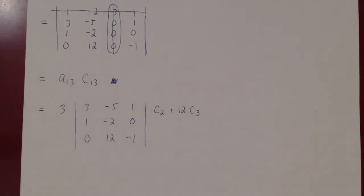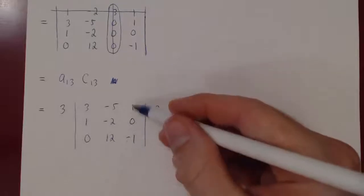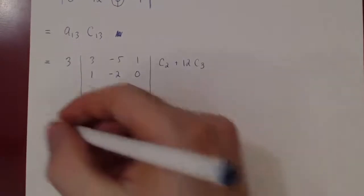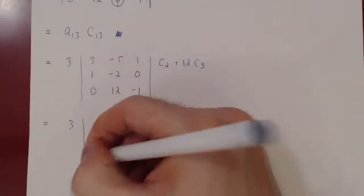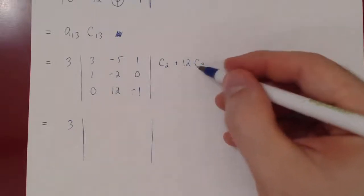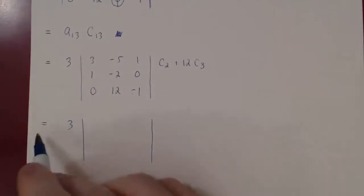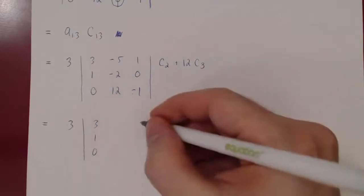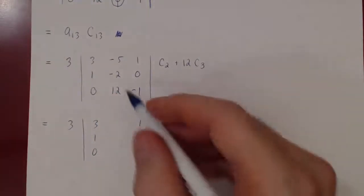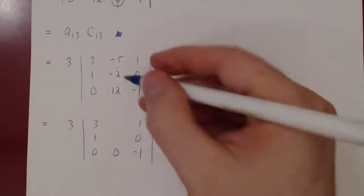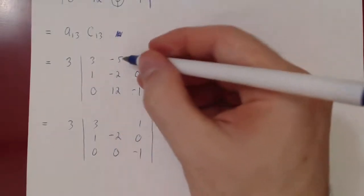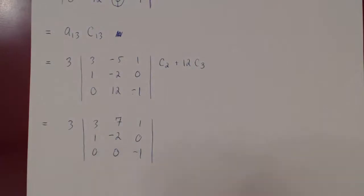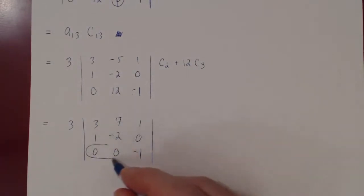This remains 3 times the determinant. Adding a multiple of a column to a different column does not change the determinant, so it stays the same. We only change column 2 and copy the first and third columns. The new column 2 entries are: negative 5 plus 12 times 1 equals 7; negative 2 plus 0 equals negative 2; and 12 plus 12 times negative 1 equals 0. Now the third row has two zeros, so we use cofactor expansion along row 3.